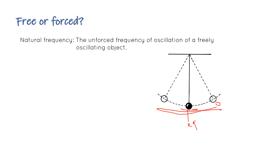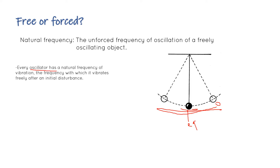Every oscillator has a natural frequency of vibration. For example, a vibrating ruler has a natural frequency. You can try this at home: place a ruler on a table, press it, and it starts vibrating at a certain natural frequency. Natural frequency is the frequency with which an object vibrates freely after an initial disturbance - once undisturbed by your force, it settles into its natural frequency automatically.